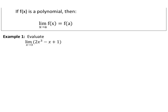Now it's important to note that I use the word polynomial here, because we have a very unique theorem for limits that says if f of x is a polynomial, then the limit as x approaches a of the function f of x is simply f evaluated at a.